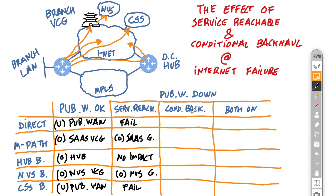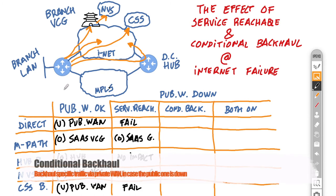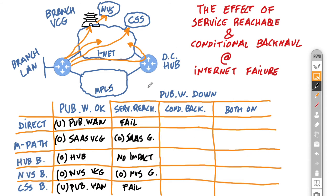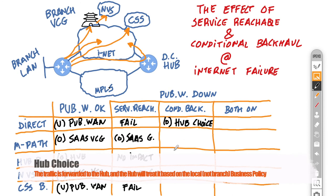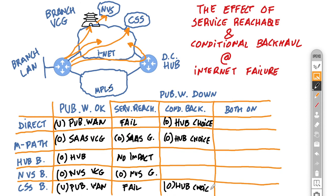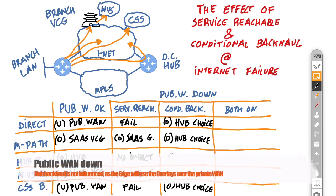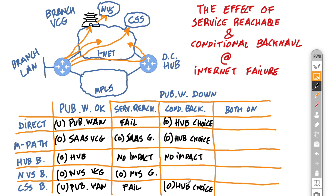But now with conditional backhaul, we can improve things. Because if you mark the DC hub for conditional backhaul, the branch will start sending internet traffic to the hub and then the hub will apply its own policy. So in case the public link fails, the branch will send everything through the overlay, and now both direct, multipath, and also CSS traffic will flow. There is still no impact at the hub backhaul because nothing changes in that scenario. The only thing to be mindful of is that if you're doing any sort of NVS backhaul, and only conditional backhaul is configured, that traffic will fail.